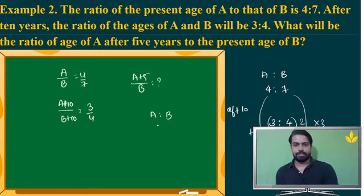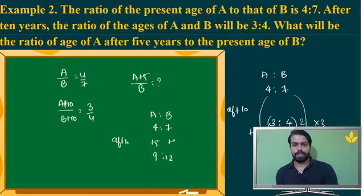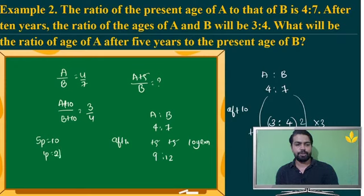So, the present ratio is 4 is to 7. After 10 years, the ratio can be modified to 9 is to 12. That means plus 5 and plus 5 — but actually I am adding 10 years. So I can use this relation and say 5 parts is equal to 10 years. So 1 part is 2. Present age is 4 into 2, which is 8 years, and B's present age is 14 years.